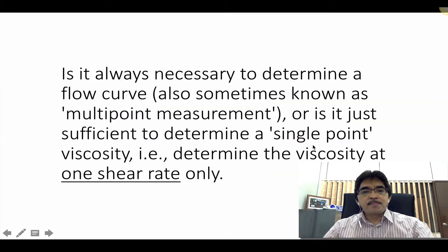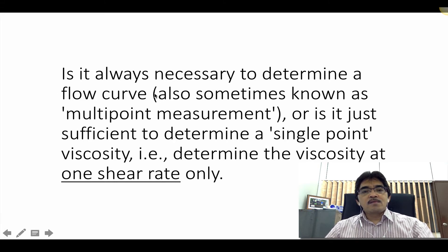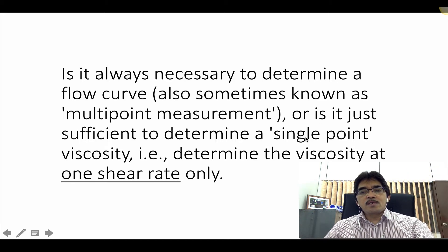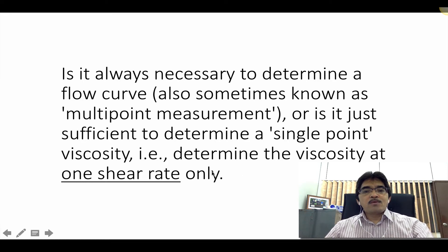So the question here is, is it always necessary every time you want to determine the whole flow curve, which covers shear rate from 0 to 100 or 1,000 reciprocal seconds, or maybe you just fix to a constant shear rate, then measure the viscosity at that particular shear rate? Should we always measure the flow curve or can we measure only the viscosity at a constant shear rate?